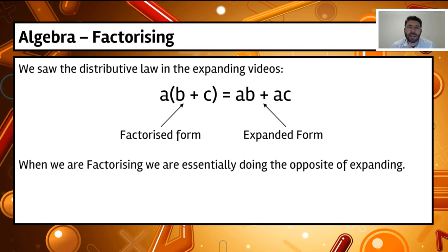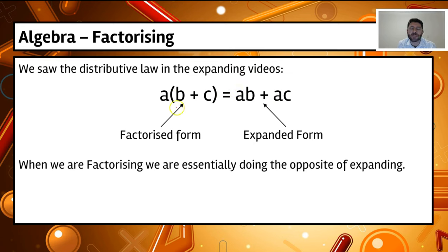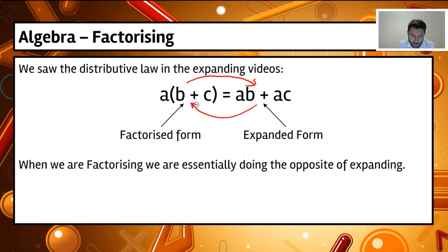Going back to what we've seen already: when we did expanding, we saw that the distributive law states that when we multiply a term outside the brackets by two terms inside the brackets — in this example, a(b + c) — our result is ab + ac. The expression with brackets is called factorized form, where you have a factor outside multiplied by factors inside, and the expanded form is where we expand that out. We've gone from factorized to expanded before, and now we're going to come back the other way. When we're factorizing, we're doing the opposite of expanding.